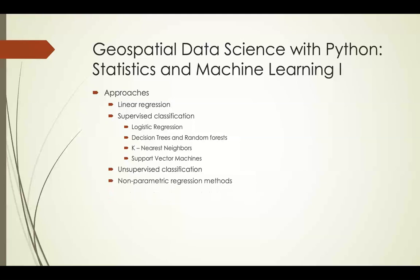Finally, we'll look at some non-parametric regression methods that don't assume an underlying distribution of the data. Many of these methods — such as decision trees, k-nearest neighbors, and support vector machines — can also be used for regression problems to predict a continuous numerical variable, as well as for classification problems.